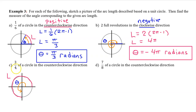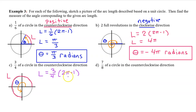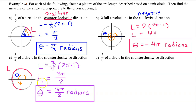Part C: three-quarters of a circle rotating in the counterclockwise direction. The counterclockwise direction means the radian measure will be positive. The arc length will be three-fourths of the circumference, which is 6π/4, reducing to 3π/2. On the unit circle, arc length equals the radian angle measure, so theta equals 3π/2 radians.